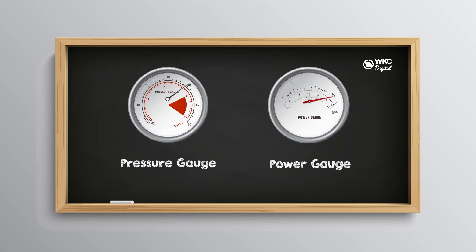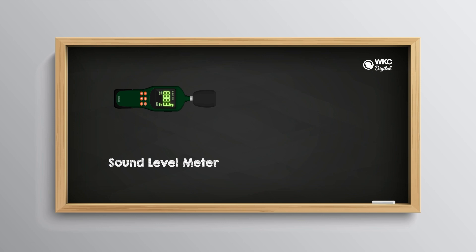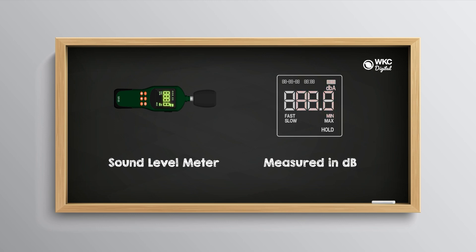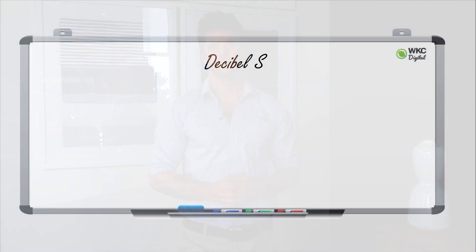That might lead you to assume that sound levels would normally be measured in pascals or in watts. However, sound is commonly measured and expressed in decibels. The decibel scale is a logarithmic scale intended to make the audible range of sound pressures and sound powers more intuitive and manageable.